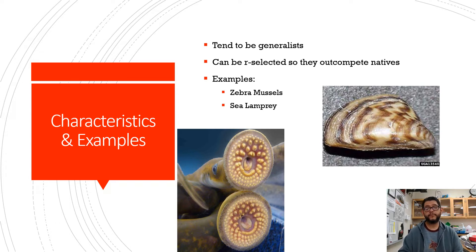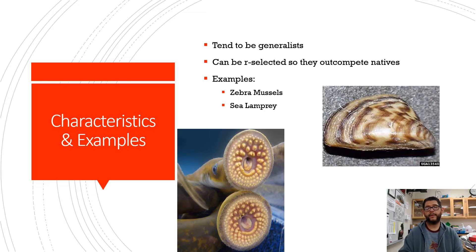Zebra mussels are little tiny clams that over-filter water, so they out-compete most of the other types of mussels in the area and make the water very oligotrophic.